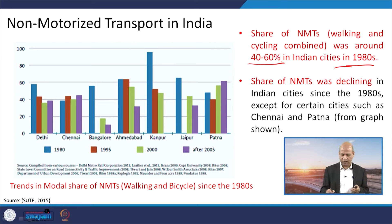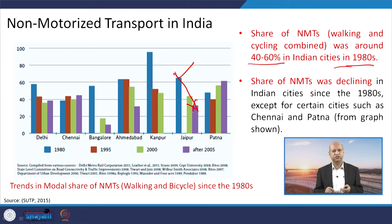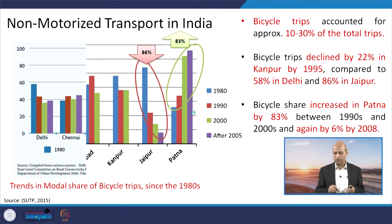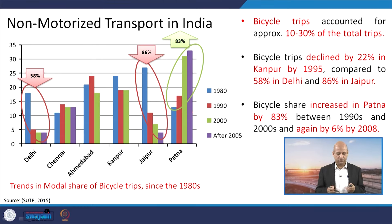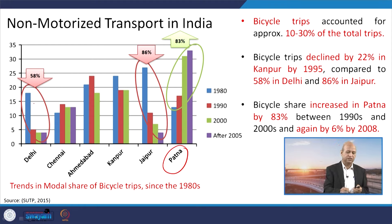For example, in Jaipur the NMT share has reduced drastically — by around 86 percent. In most cities this NMT share has fallen sharply, which is bad for public health and the environment. There are some positive exceptions like Patna, where NMT share has increased around 83 percent. In Delhi it has decreased by around 58 percent, as high congestion and traffic jams make walking on roads impractical and unsafe.